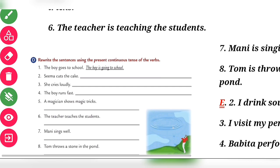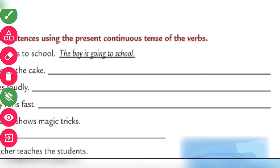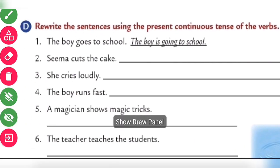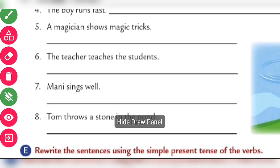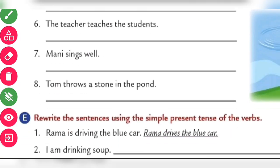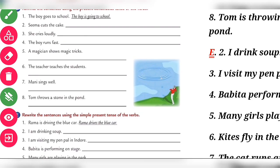Exercise D, using present continuous tense, write the sentences. The boy goes to school becomes the boy is going to school. Seema cuts the cake becomes Seema is cutting the cake. She cries loudly becomes she is crying loudly. The boy runs fast becomes the boy is running fast. A magician shows magic tricks becomes a magician is showing magic tricks. The teacher teaches the student becomes the teacher is teaching the student. Money sings well becomes money is singing well. Tom throws a stone in the pond becomes Tom is throwing the stone in the pond.